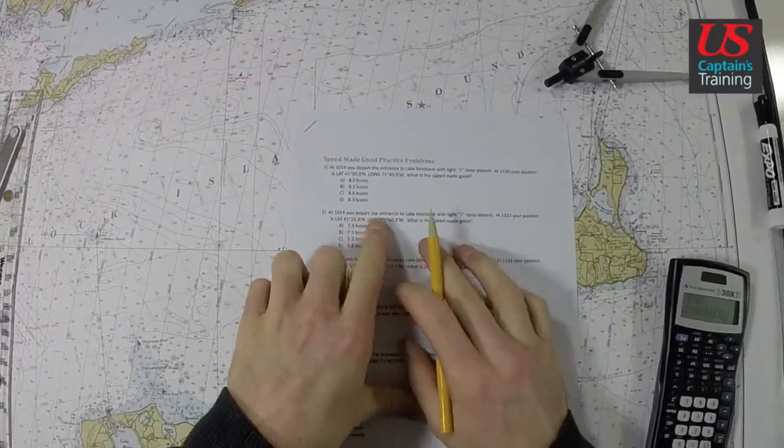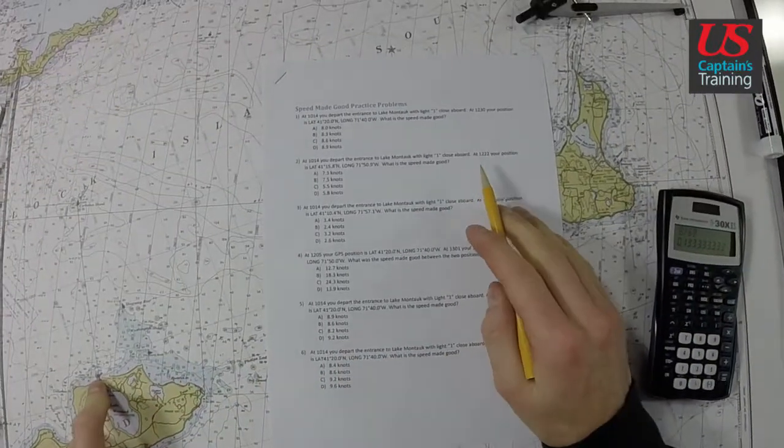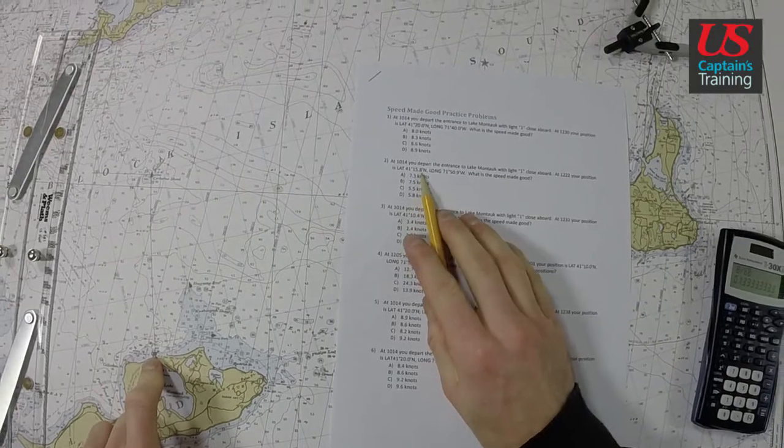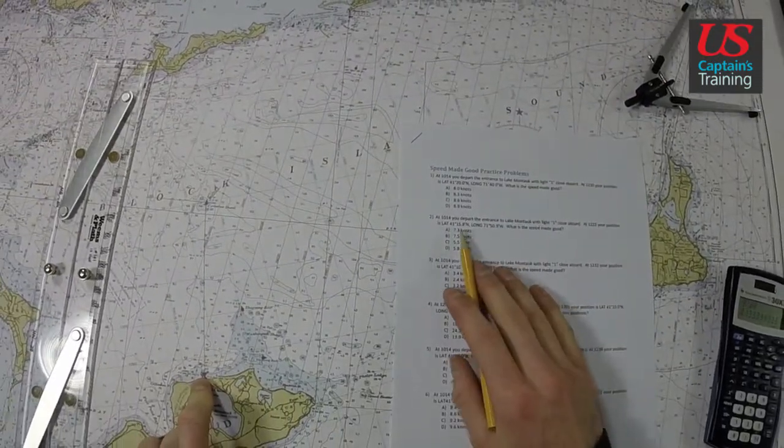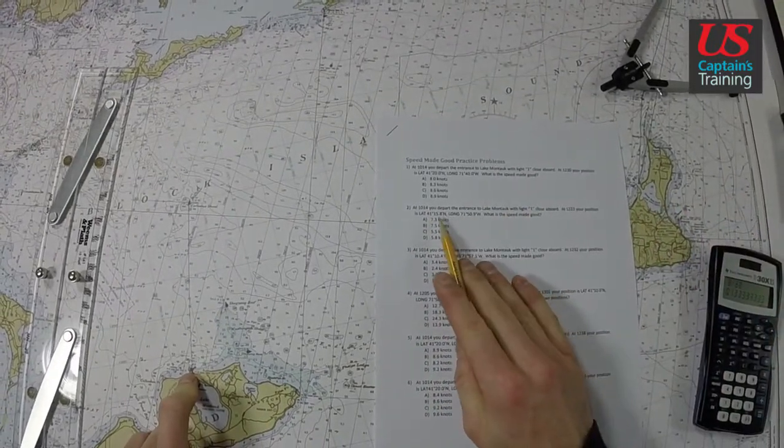It says here we depart Lake Montauk with light one close aboard right here. At 1222 your position is 41.15, 71.50. So 41.15, we're just going to get an estimate of where we are, general location.